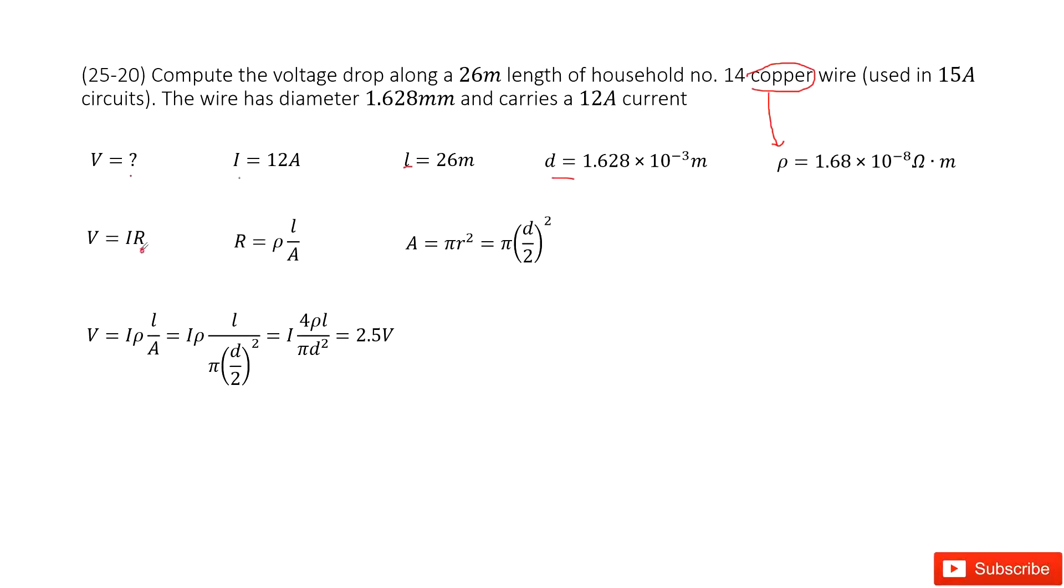No, the R, resistance. As we look at the quantities given, it gives you L, D, rho. So very easily we can consider resistance as rho L over A, right?